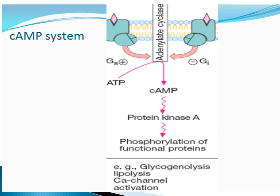Ligand-gated receptors are directly coupled, while G-protein coupled receptors, as the name shows, are coupled via G-proteins. Enzymatic receptors are directly coupled, and nuclear receptors are coupled through DNA. Examples: ligand-gated receptors include nicotinic receptors; G-protein coupled receptors include muscarinic receptors; and enzymatic receptors include insulin receptors.